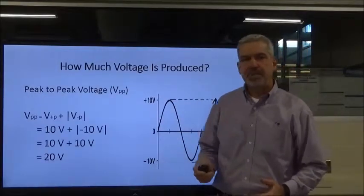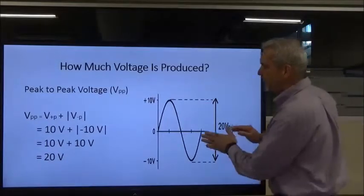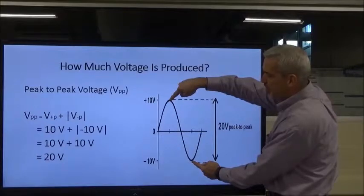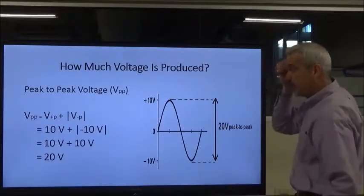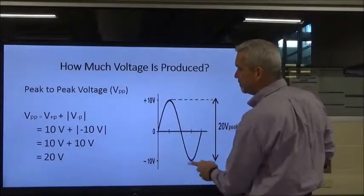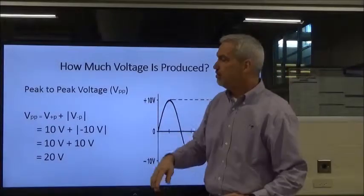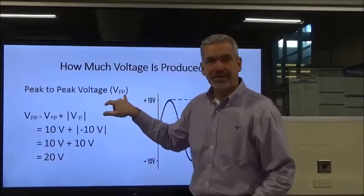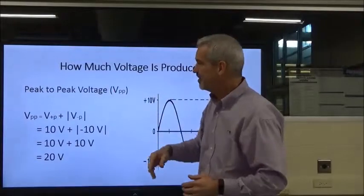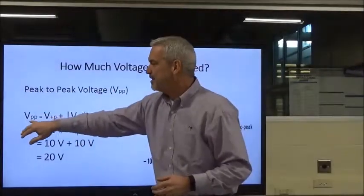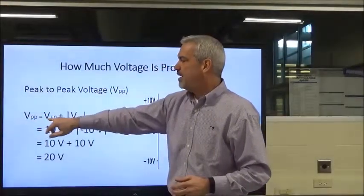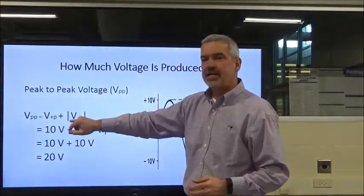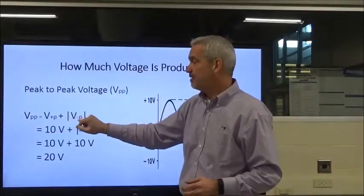We also have peak-to-peak voltage. These are the voltages that don't reference the zero line — they reference the peaks themselves, the distance between the two peaks of power. In this particular case, we've got 10 volts positive and 10 volts negative as peaks. We notate this as V-sub-PP. So V-sub-PP equals V of positive peak plus the absolute value of V-sub-negative-P.